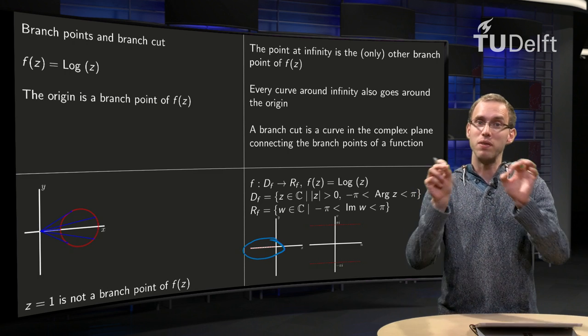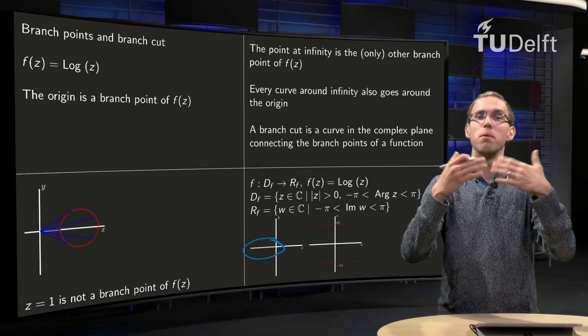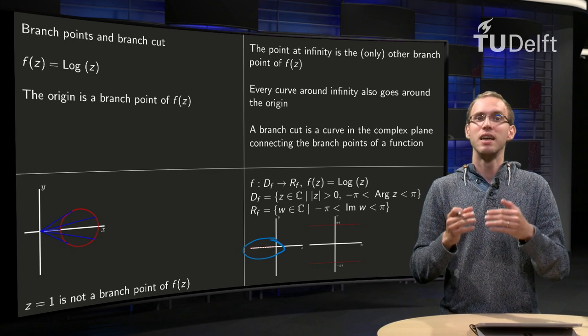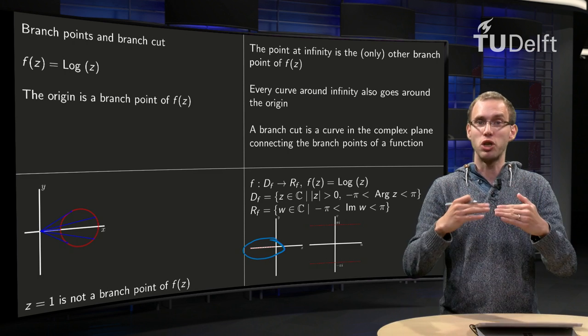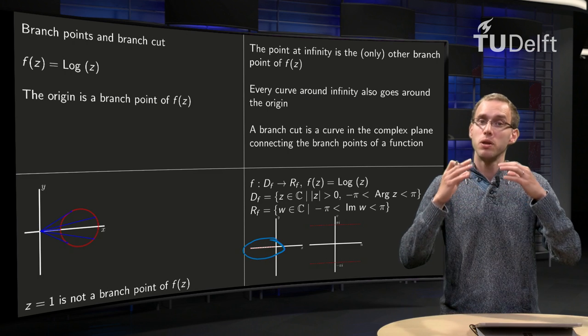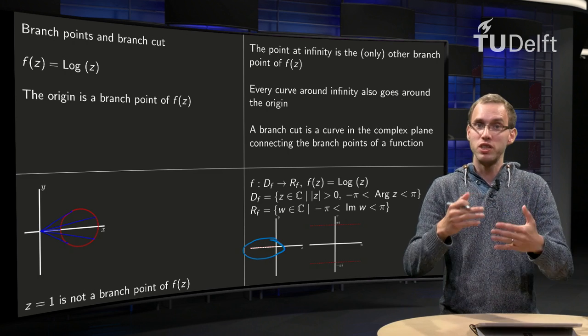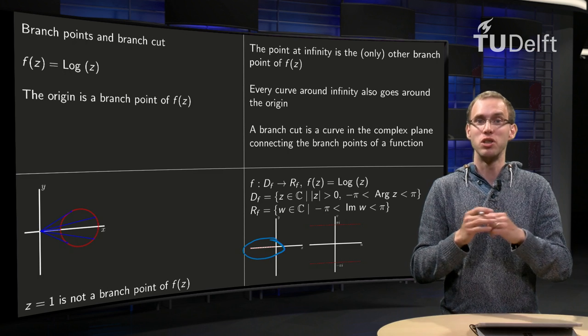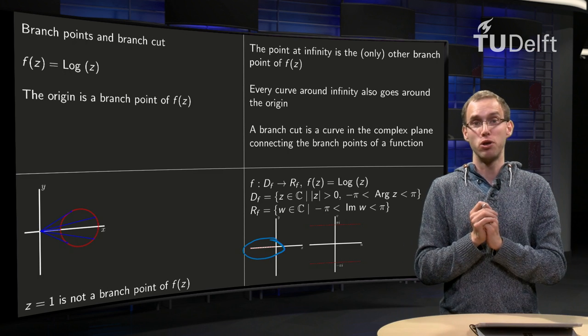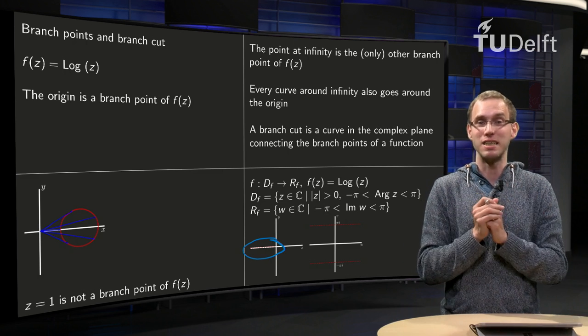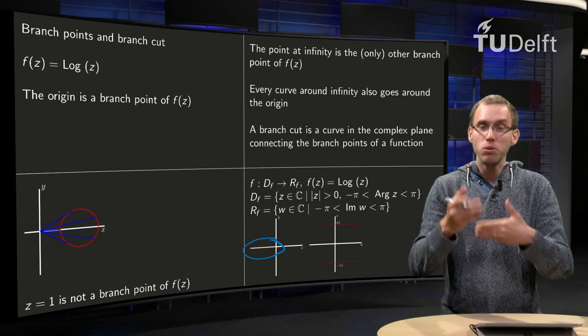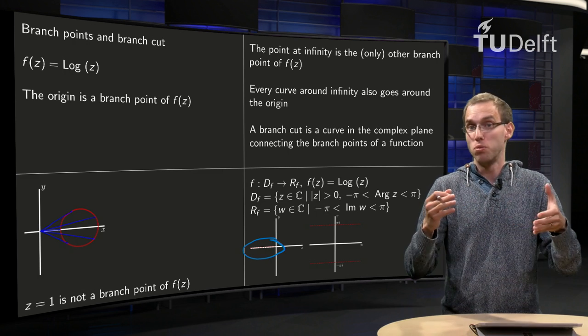And we connect them for example along the negative real axis, and we call that connection a branch cut. We say we restrict the domain to all of C, except for all points at the branch cut. So you cannot cross the branch cut, you cannot access the branch cut, and our new domain will be a slightly smaller set.